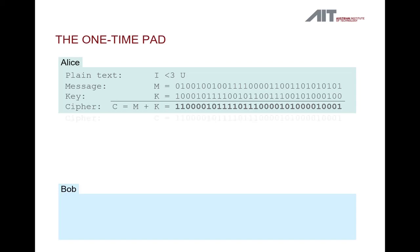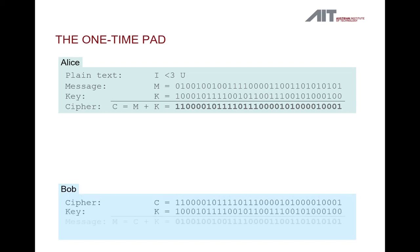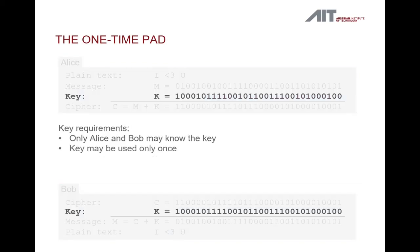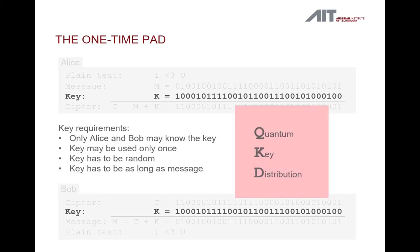Binary addition of the message and the key will yield the cipher — the encrypted message transmitted to Bob. In order to decipher Alice's message, Bob uses the same key that Alice used for encryption. This protocol is proven to be information-theoretically secure. That means it is unhackable, regardless of how advanced hacking technology is or will be in the distant future. But it begs one question: how can Alice and Bob obtain a key that fulfills these strict requirements? This is exactly what quantum key distribution is used for.